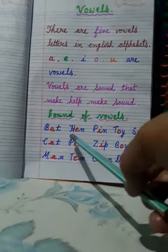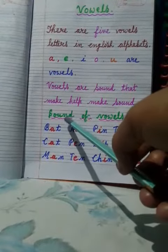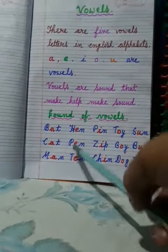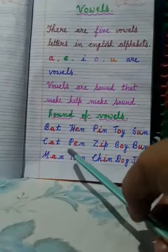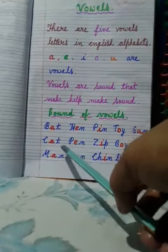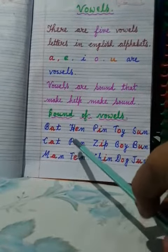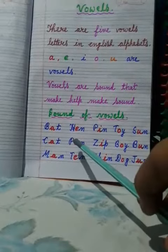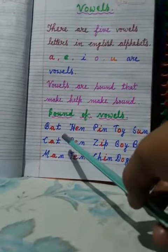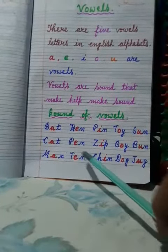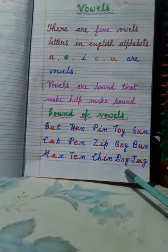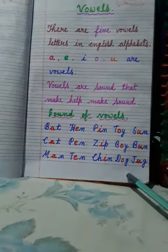मैंने आप लोगों को 3-3 examples दे करके sound of vowels को समझाया है। अब आप लोगों को ऐसे ही 55 words अपने अपने copy में अलग-अलग लिखना हैं और घर पर अच्छी तरह से practice भी करना हैं। Okay?